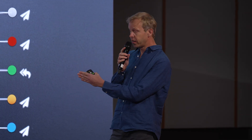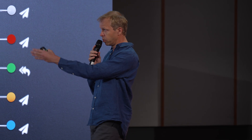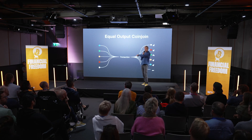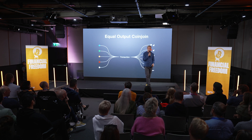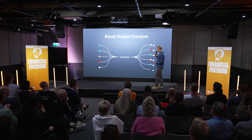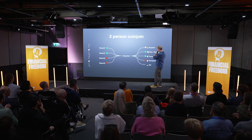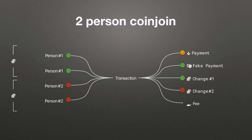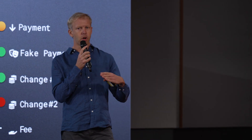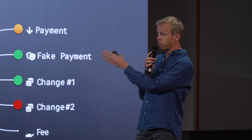One of the difficulties with this approach is the amount of coordination required — not only do we need people contributing more or less the same input value, but we also have to coordinate them to create such a transaction. What if we simplify this down to two people, relaxing the input requirements by having change outputs? You can see how there are two payment amounts, and it becomes quite difficult for someone on the outside to determine which is the payment and which is the fake payment — again lowering the probabilities of following this flow of funds.